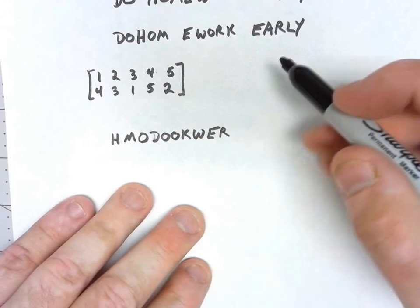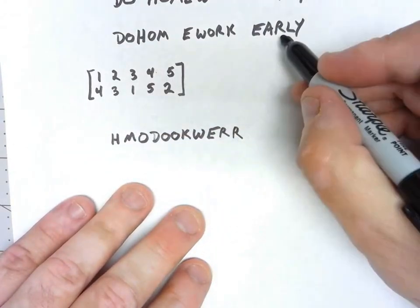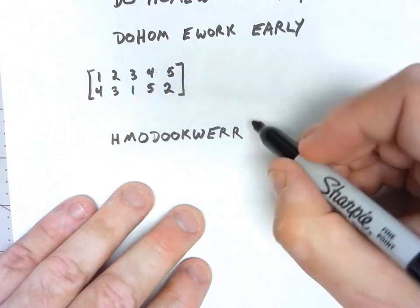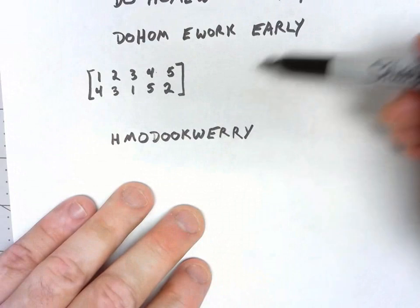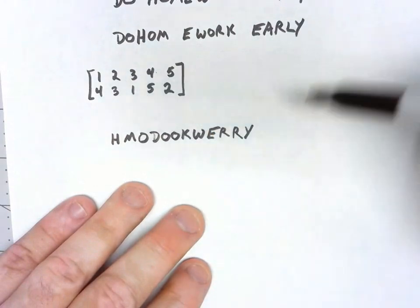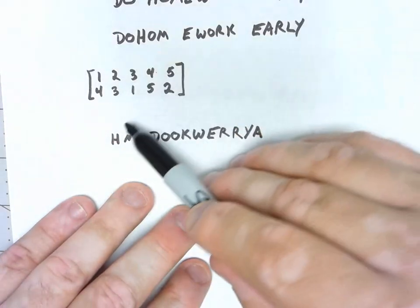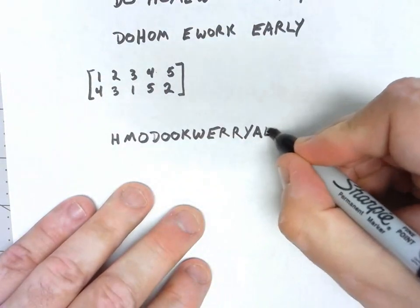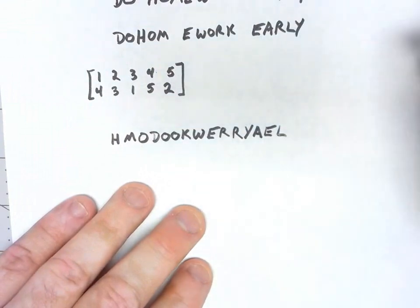Same thing again, first position is the third letter, is another R. Second position is the fifth letter, is a Y. The third position is the second letter, is an A. The fourth position, first letter, is an E. And then finally, fifth position is an L.